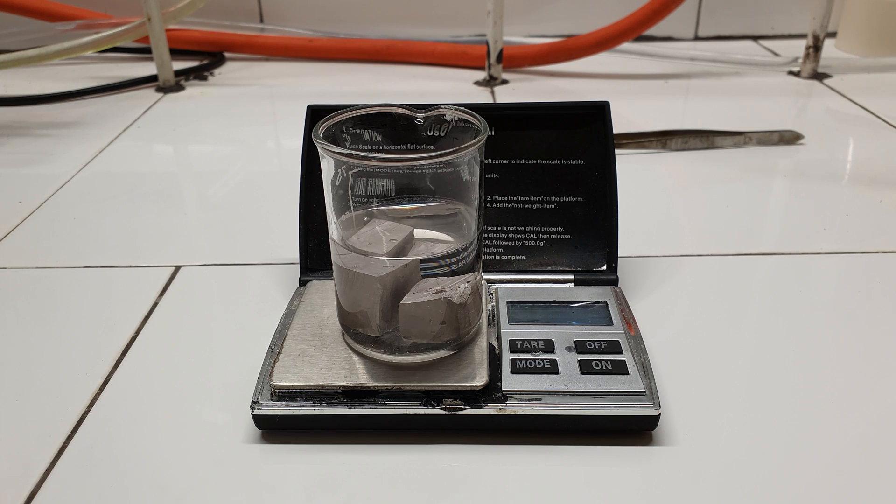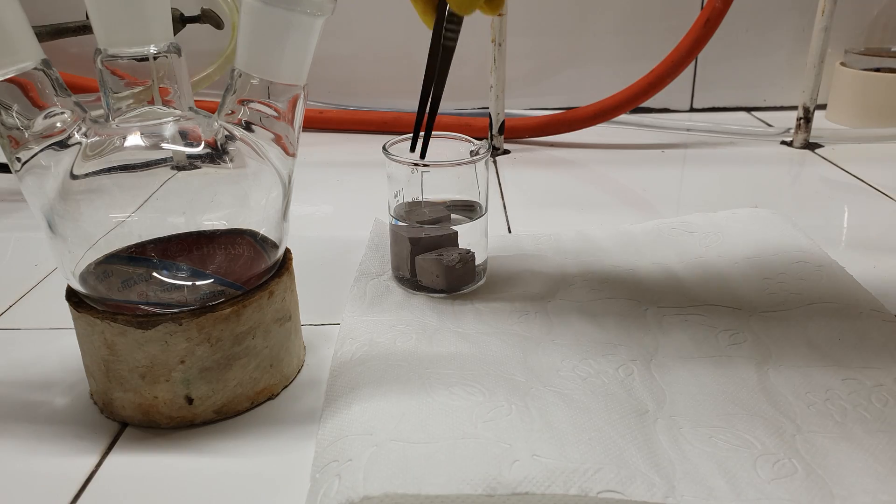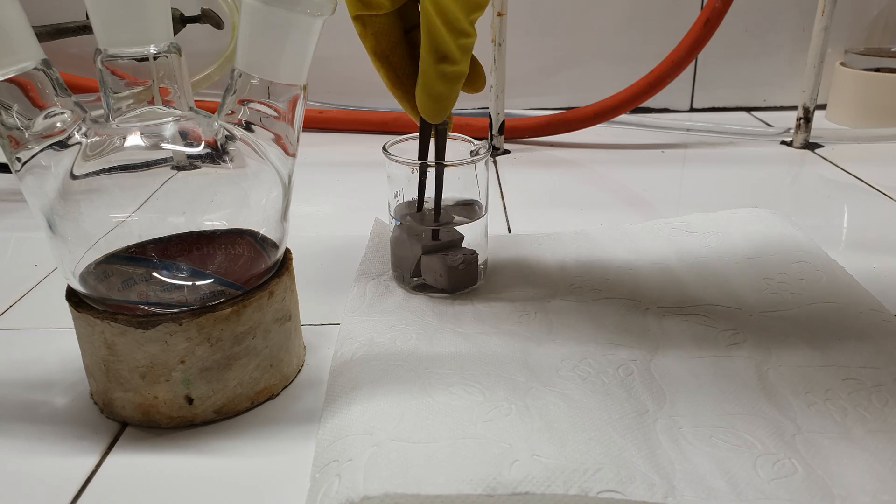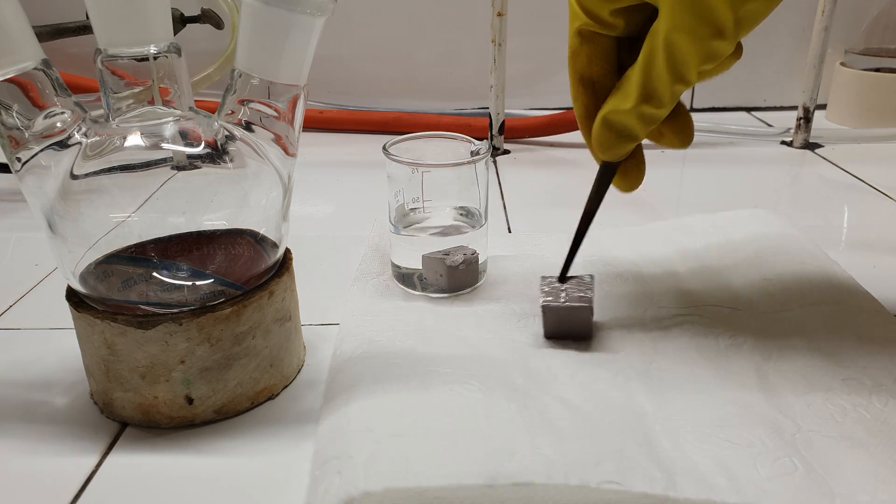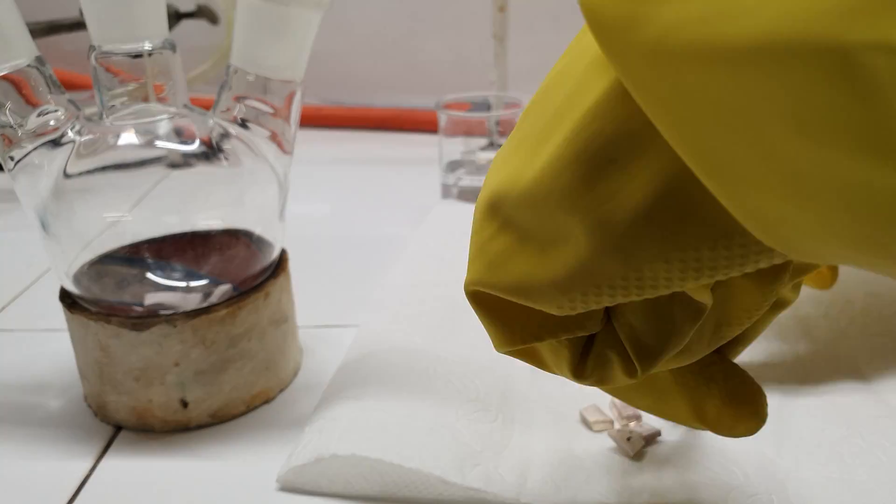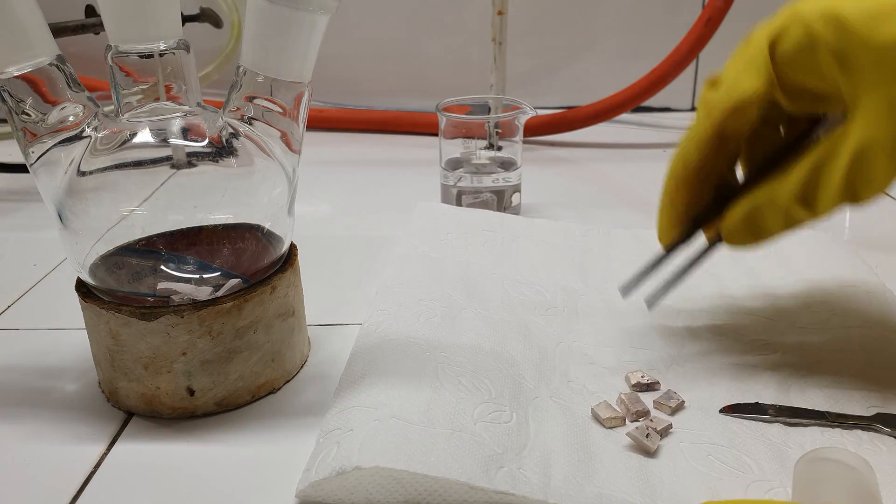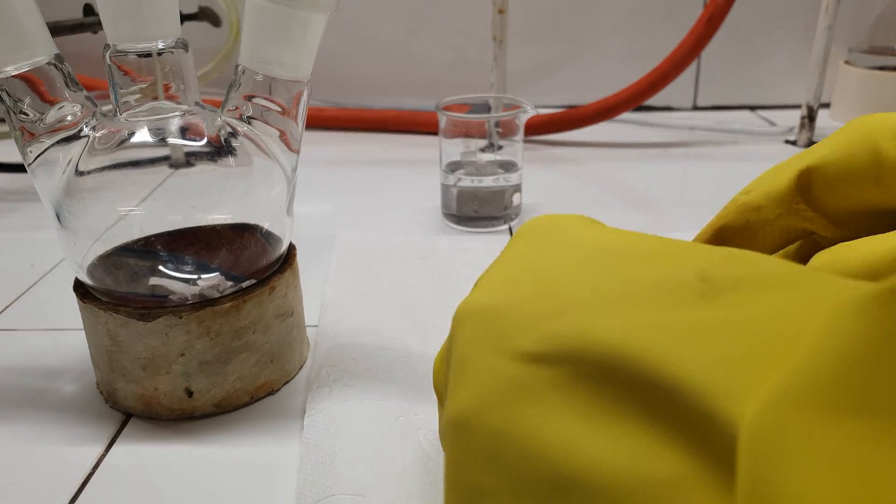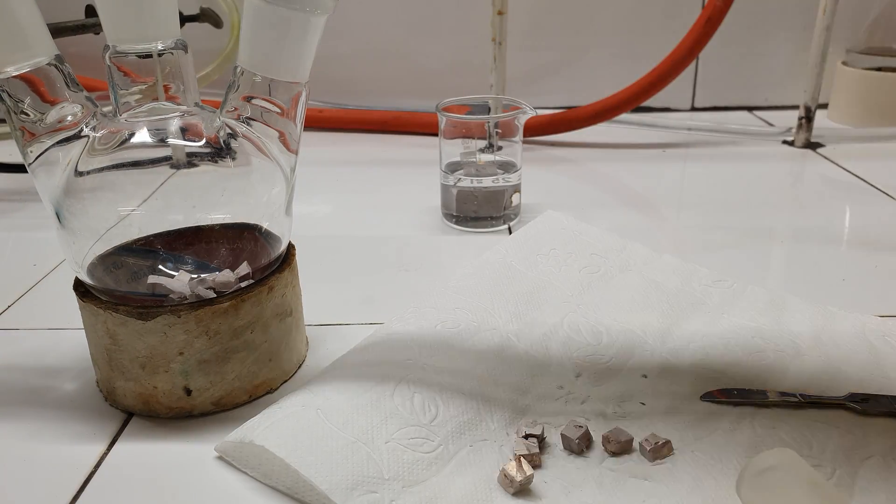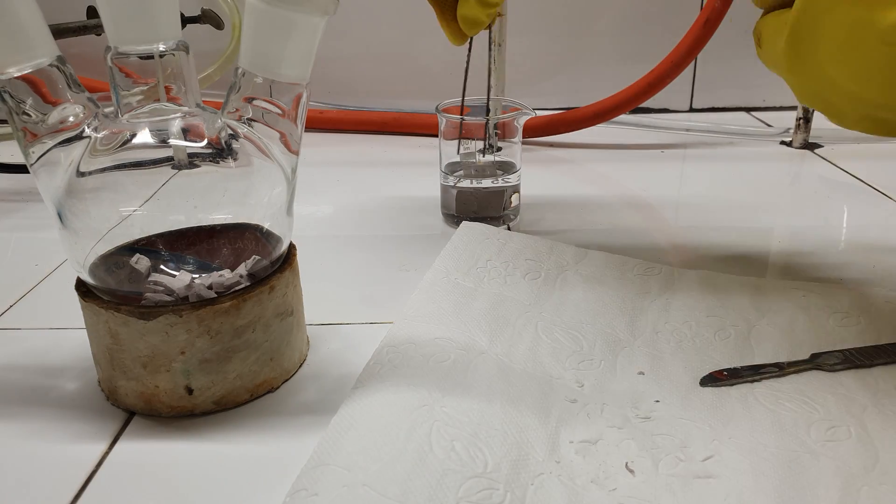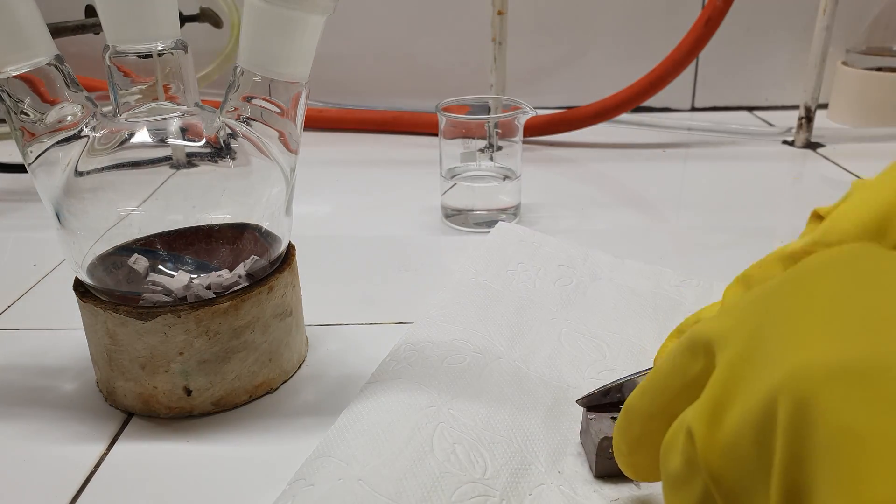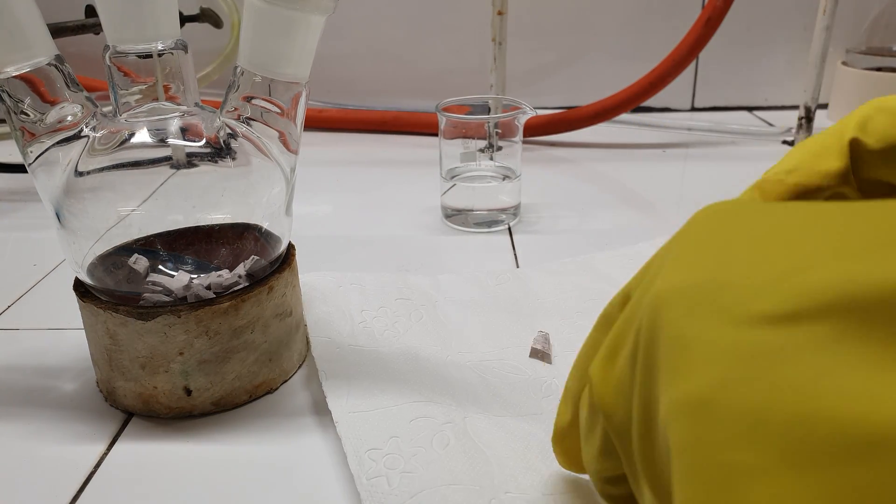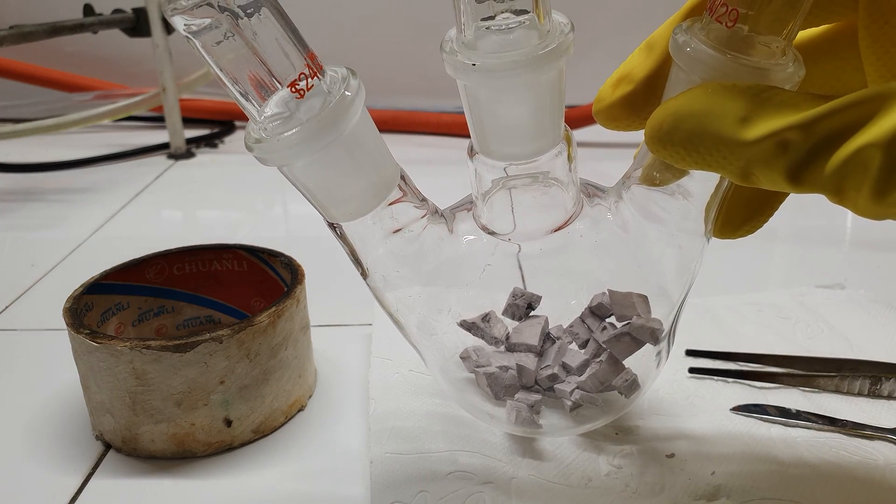I cleaned about 12.45 grams of the sodium metal from its oxide layer and now it's time to chop it. To do it, I imagined that I cut carrots for my soup and it totally can't kill me. Here are my carrots for the soup.